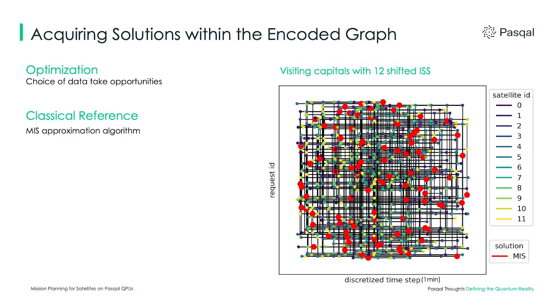Now that we've encoded the problem into a graph, how do we solve it? We want to maximize the number of missions accomplished. A mission is a node, so we're looking for the biggest set of nodes that respects our constraints, where constraints are edges. We're looking for the biggest set of nodes such that no two nodes share an edge — this is called a maximum independent set. Using a classical heuristic method, we can see here an example of a maximum independent set shown with red dots.